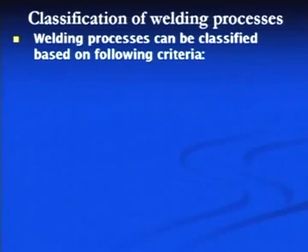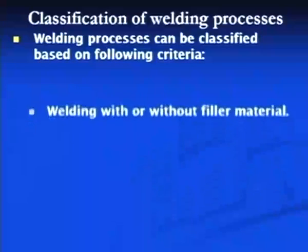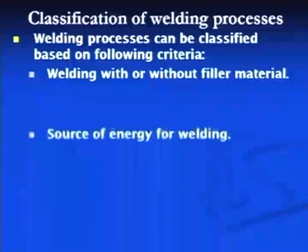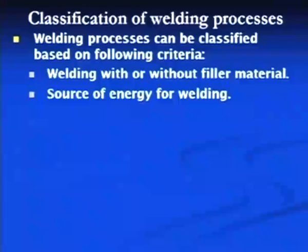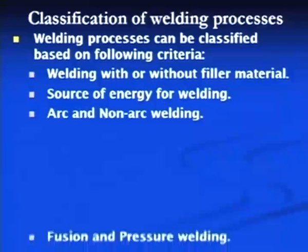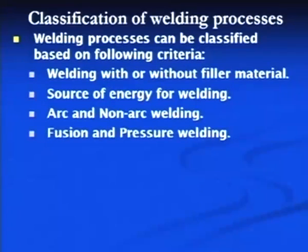Welcome students. This is the second lecture based on welding process classification. The classification of welding processes can be done on the basis of many criteria. The welding process can be classified on the basis of four main parameters: welding with or without filler metal, the source of energy being used for welding, welding may be arc or non-arc type, and fusion and pressure welding type.